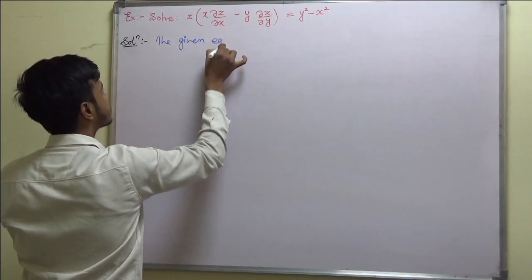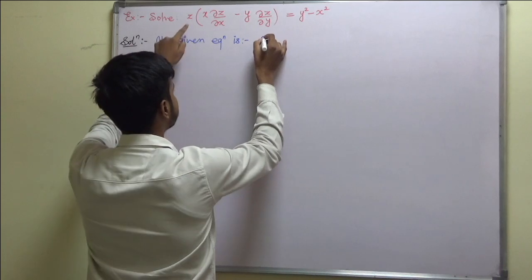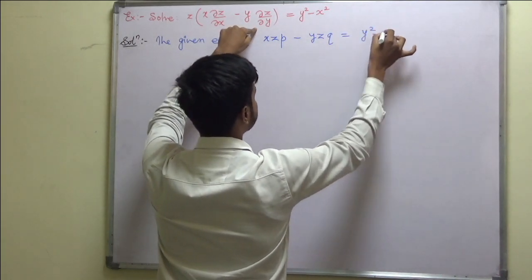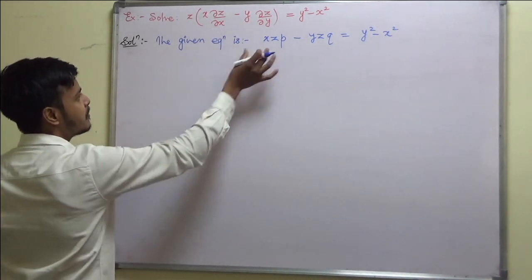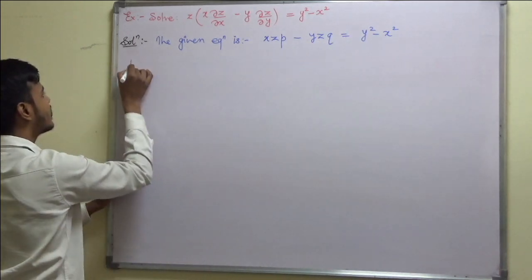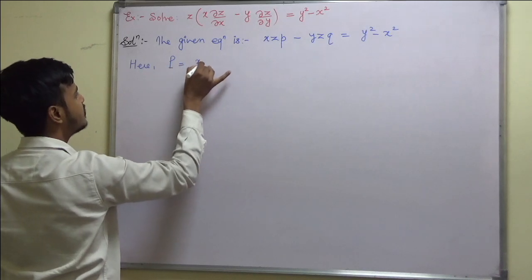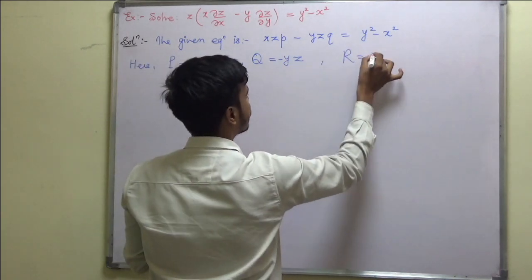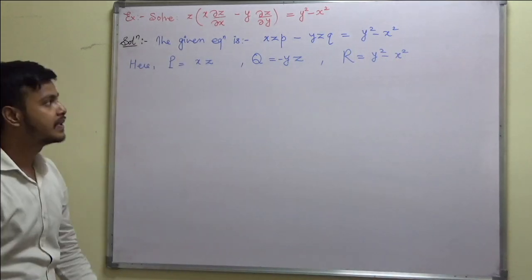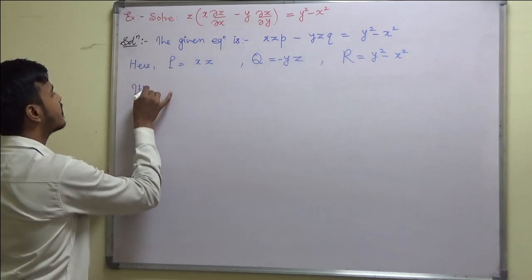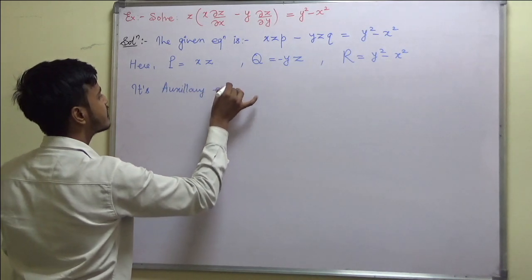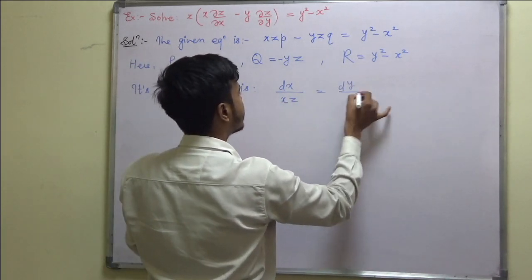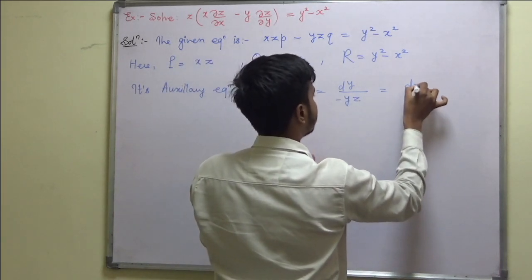The given equation is: xz·∂z/∂x minus yz·∂z/∂y equals y² minus x². This is of the form P·p + Q·q = R. So here P = xz, Q = -yz, and R = y² - x². The auxiliary equation is dx/P = dy/Q = dz/R.